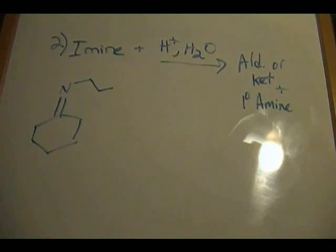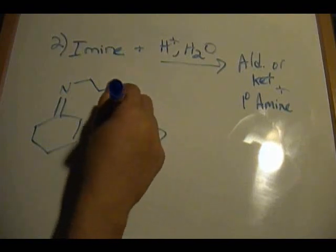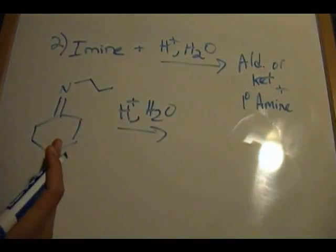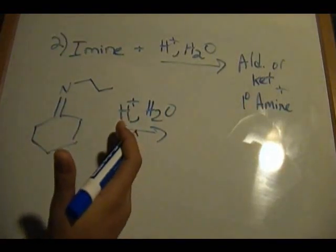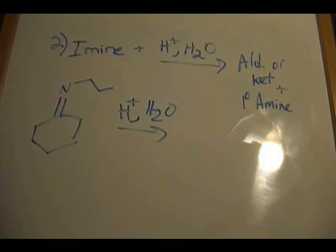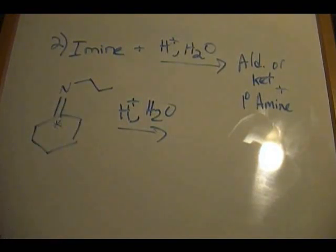Here's our last example. Here's your amine reacting with H⁺ and H₂O, forming an aldehyde or ketone plus a primary amine. In this case the amine is not located within the ring but outside of it, so you'll form two separate products — not just one like the previous example. The first thing to do is label the star carbon, which is the carbon of the C=N double bond, right there. Let's draw our starting material without this piece here.